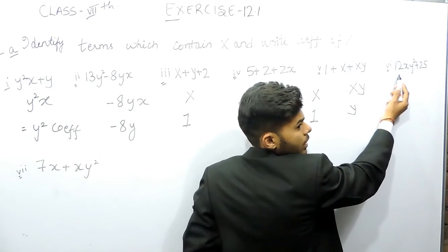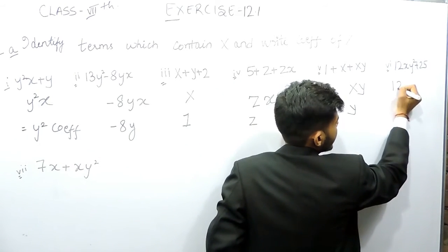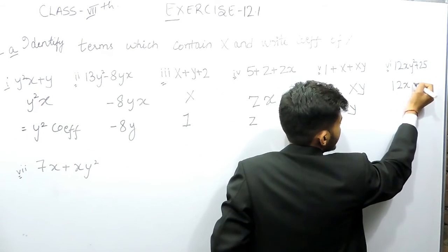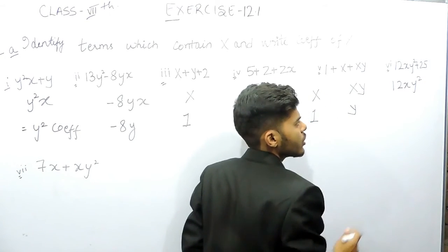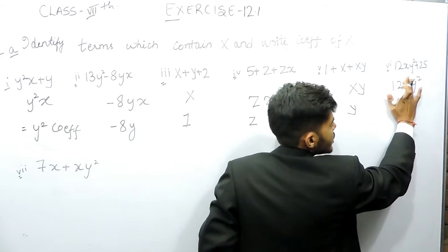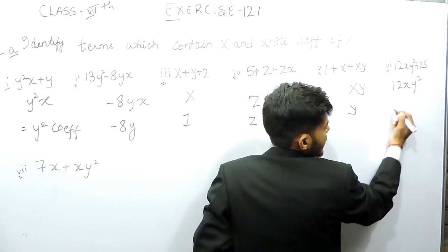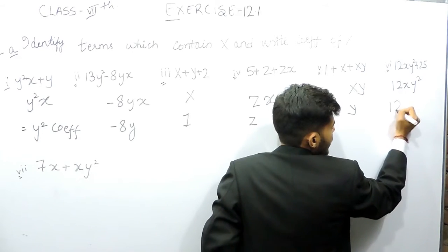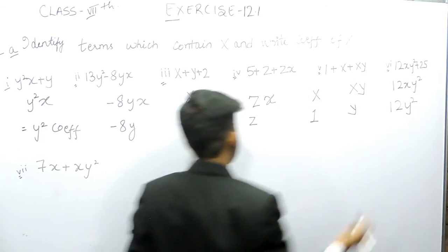In this one the term having x is 12xy squared. We have to write the coefficient of x, so we'll exclude this x and write the remaining terms, that will be 12y squared.